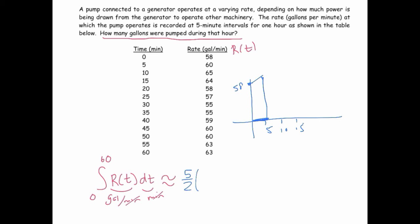And then we add y values. So 58 plus 2 times all those inner y values. So I'm just going to say 60 plus 65 plus 64 plus 58 plus 57 plus 55, another 55, 59, 60, 60, 63... Those all get doubled,